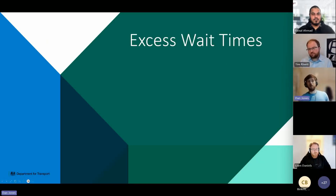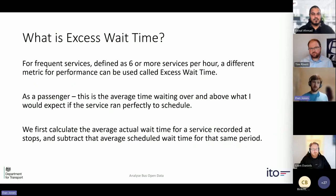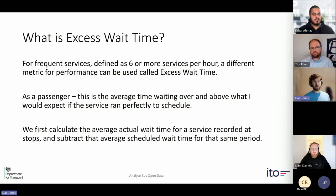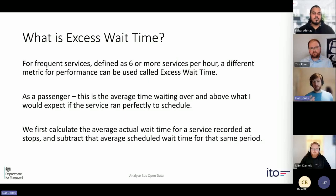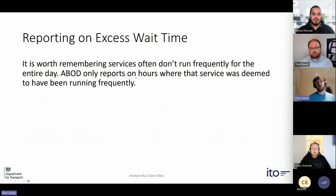Moving on to excess wait times. On-time performance reporting is for infrequent services, but for frequent services - those running six or more times per hour - we use a different metric called excess wait time. This is the average time waiting over and above what you'd expect if the service ran perfectly to schedule. We calculate the average actual wait time, subtract the average scheduled wait time, and that gives us excess wait time. ABOD reports on particular hours where we observe that service running six or more times per hour.